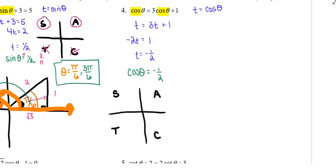I have to decide which quadrants to draw my triangles in. The quadrants where cosine is negative: not in quadrant 1 where all are positive, not in quadrant 4 either. Quadrant 2 where only sine is positive, and quadrant 3 where only tangent is positive. So I want to set up my triangles in quadrants 2 and 3.